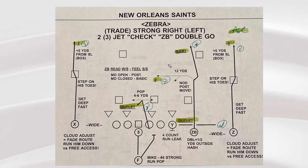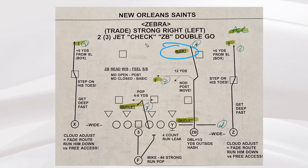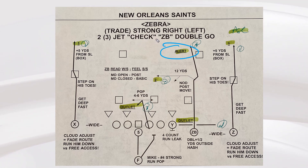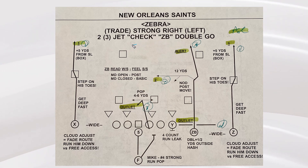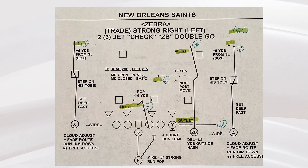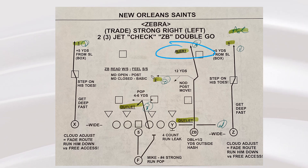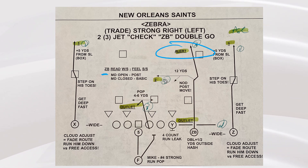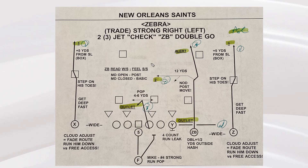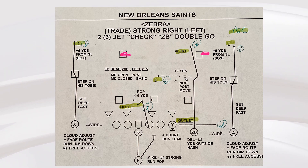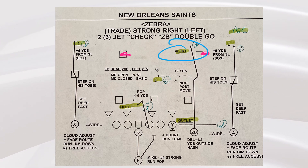The first example: alert down the middle of the field. Back in the New Orleans days — strong right, the formation. Two-jet check is the protection. Check just keeps the tight end in, makes it seven-person protection, slide protection. Zebra double go. That means right here, if it is middle of the field open, we're going to alert that post. Really more cover two than quarters. But if we get two safeties, we are hitting that post. Alert changes the read.